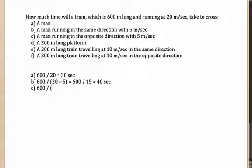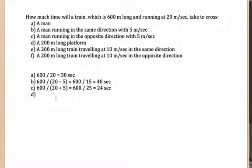What if the man and train are running in opposite directions? The only difference is in the relative speed: 20 plus 5 = 25 m/s, giving 600/25 = 24 seconds. For a 200-meter long platform, the distance becomes 600 + 200 = 800 meters, and since the platform is stationary the speed remains 20 m/s, giving 800/20 = 40 seconds.